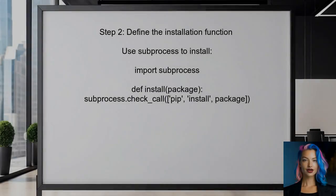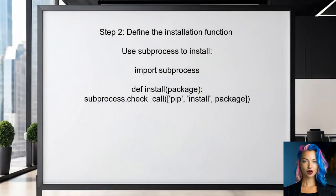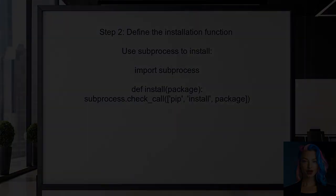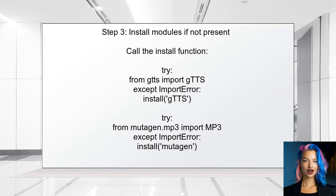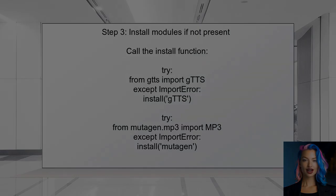If the modules are not installed, the user can define a function to install them. This function will use the subprocess module to run the installation command. The user should call the install function for each module only if the import fails. This ensures that the installation only occurs when necessary.